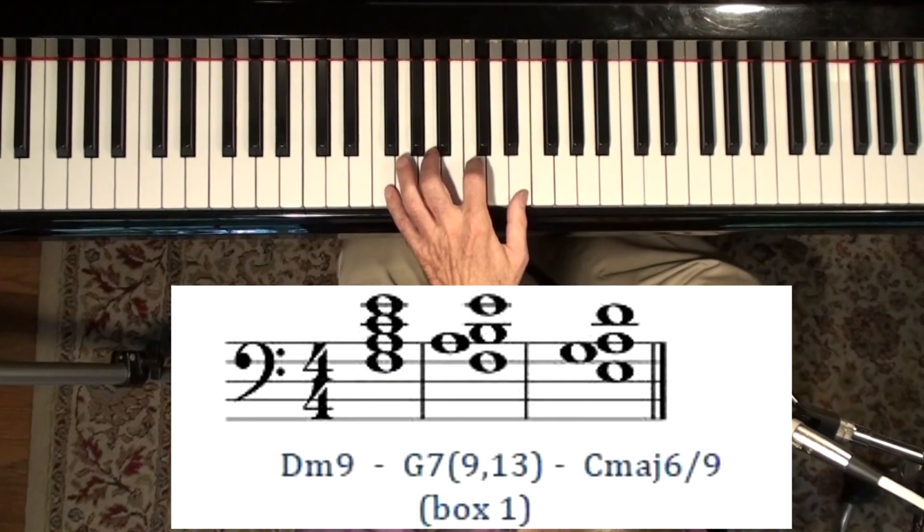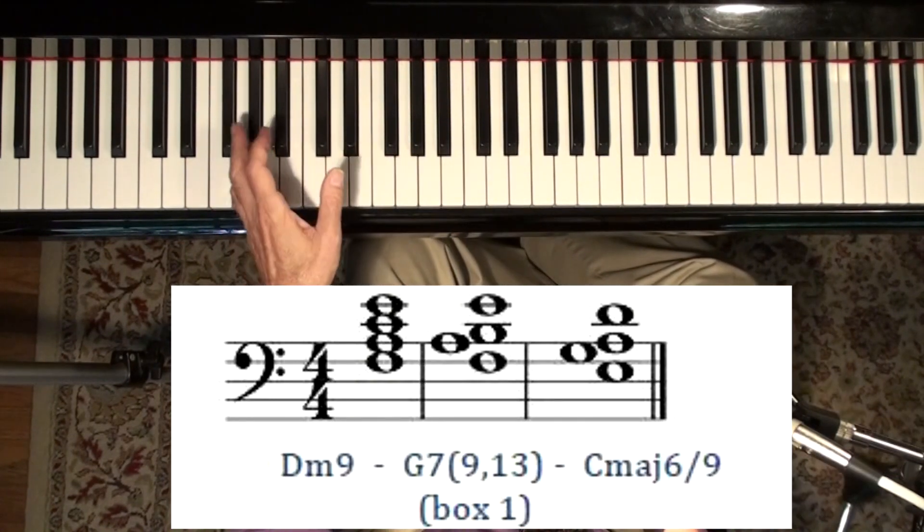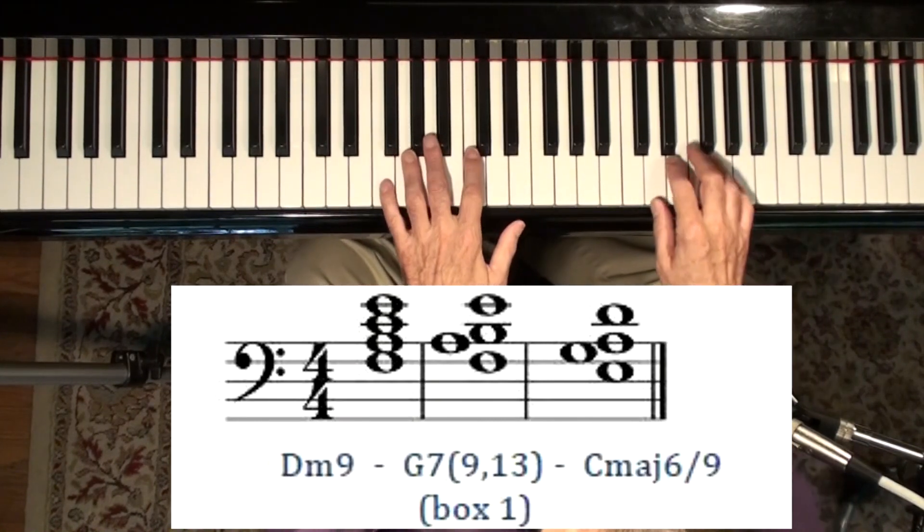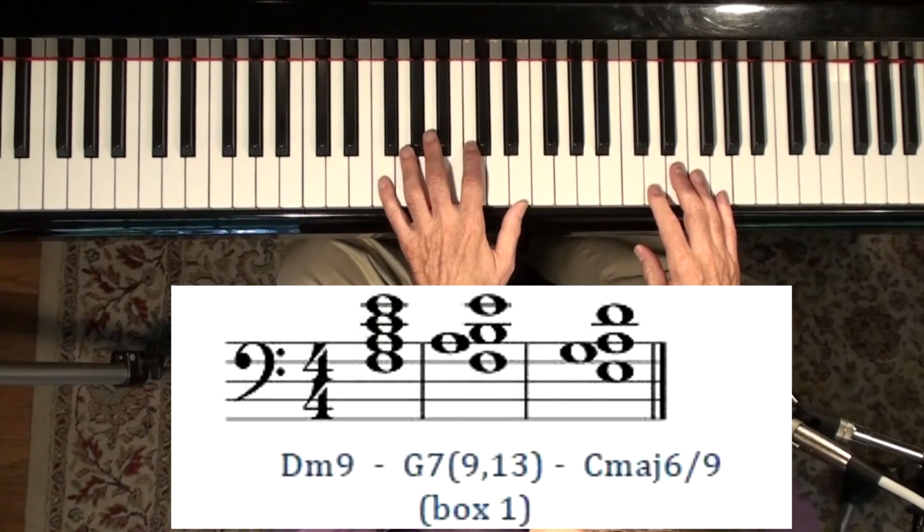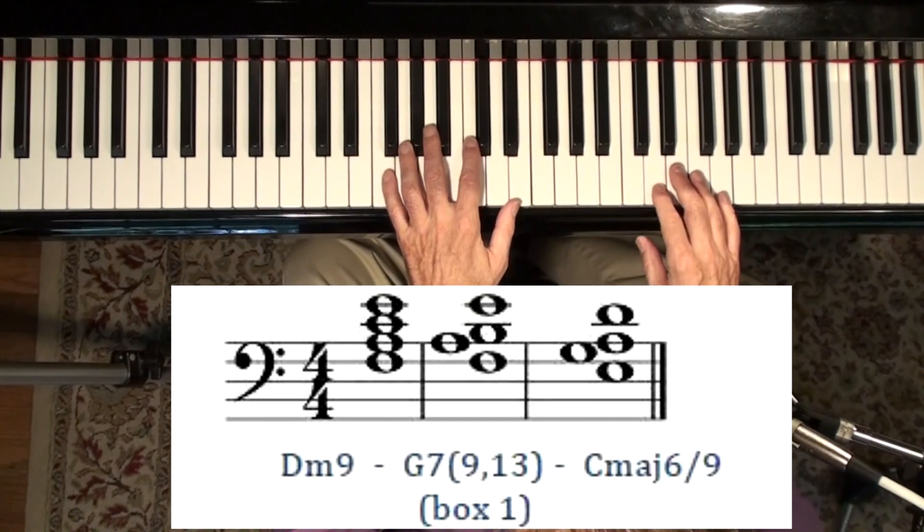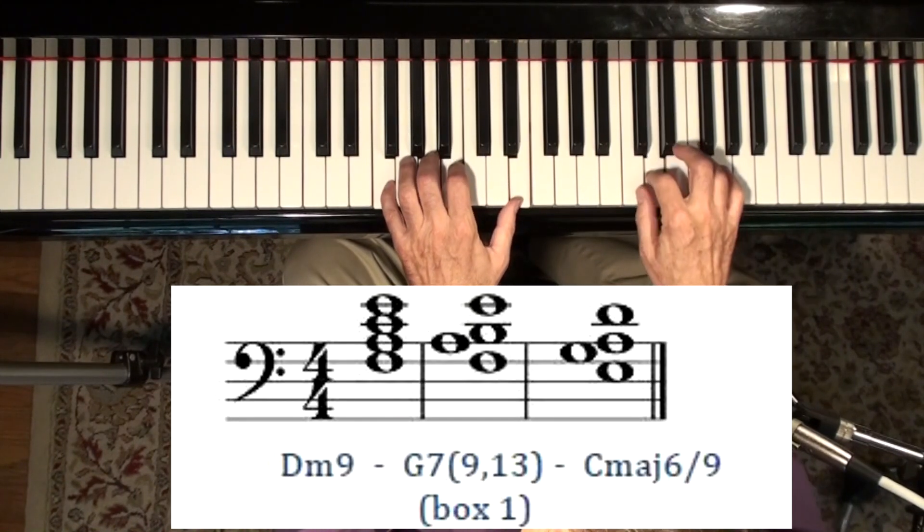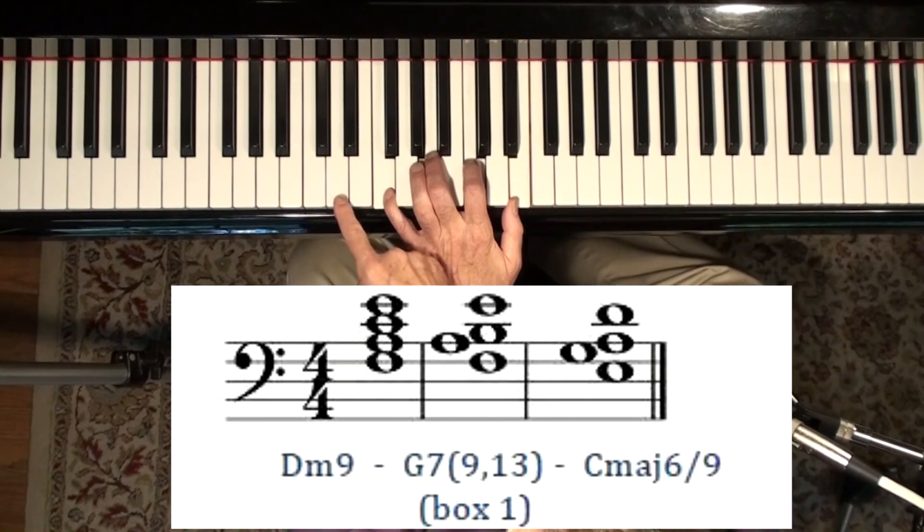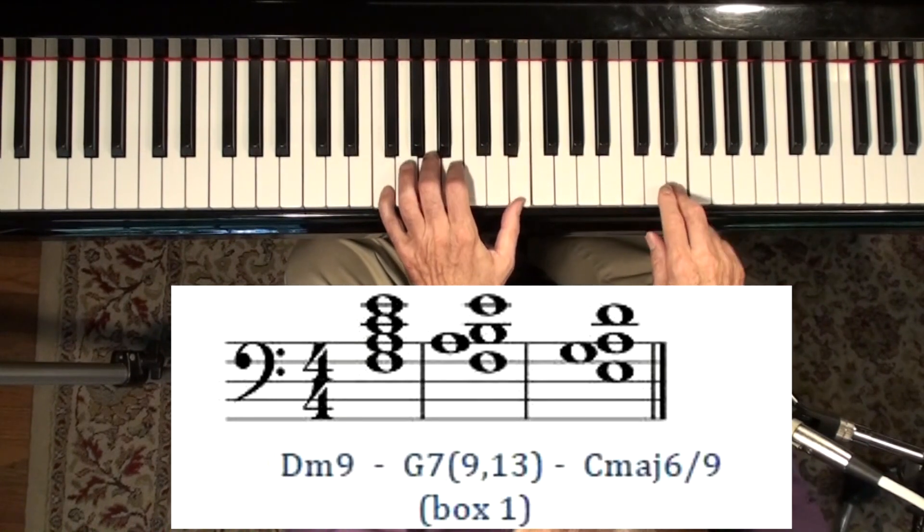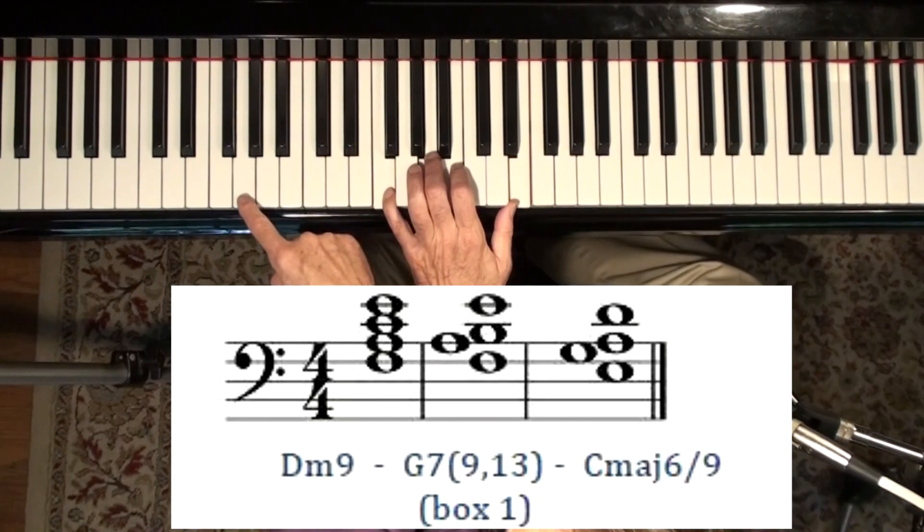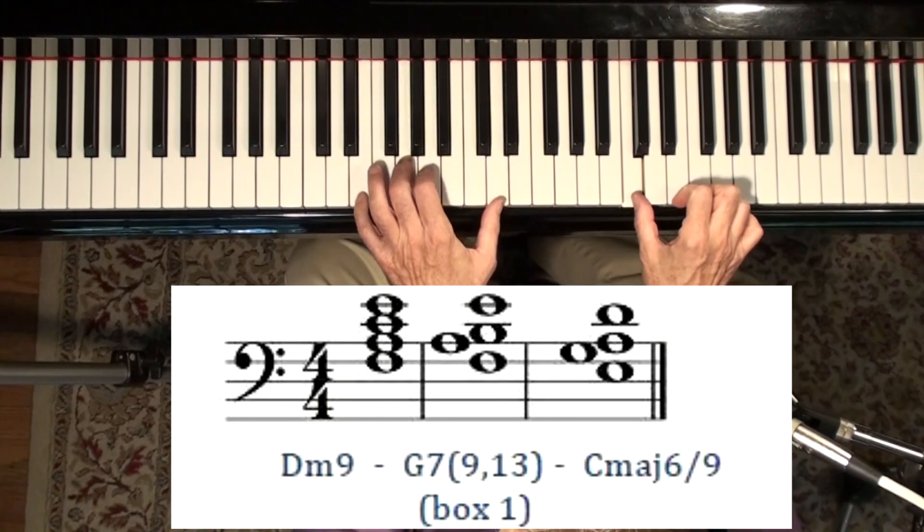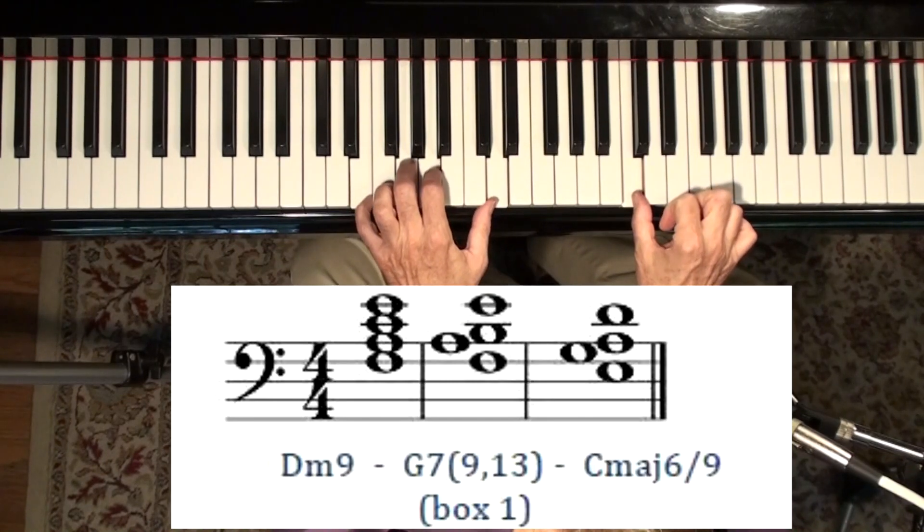This is something that your left hand can do if you have a bass player, or even if you don't. If you're taking a solo and you're playing a song that has a 2-5-1 in it, you can do it like this. So there's my D minor chord without the D. Here's my G7 chord without the G. And then there's my C.